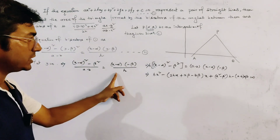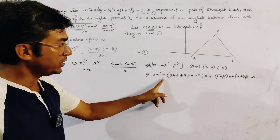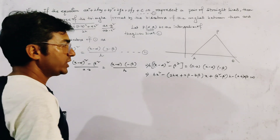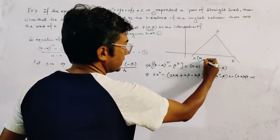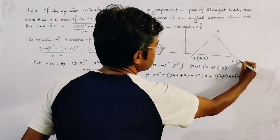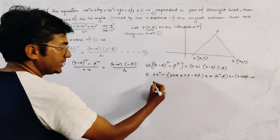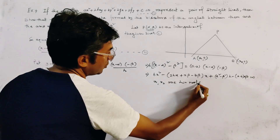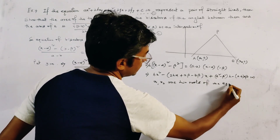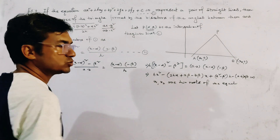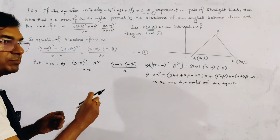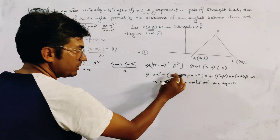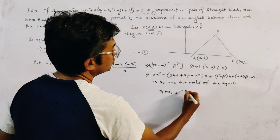Simplifying this result gives a quadratic equation in x. If the coordinates of A are (x₁, 0) and B are (x₂, 0), then x₁ and x₂ are the two roots of this quadratic equation. By the relation between roots and coefficients, x₁ + x₂ = 2hα + (a − b)β / h, written as minus b over a applied to the quadratic.